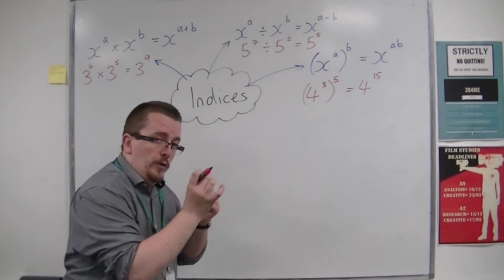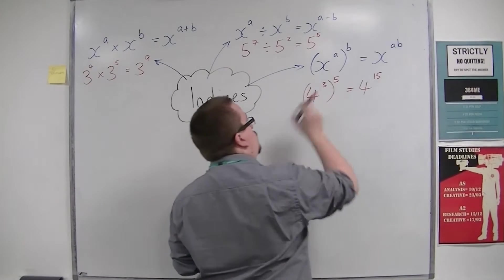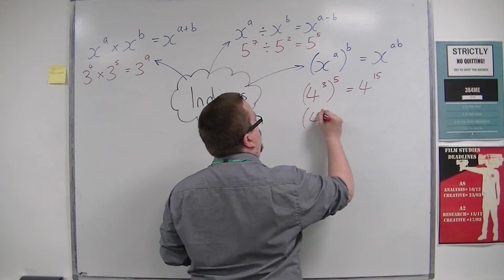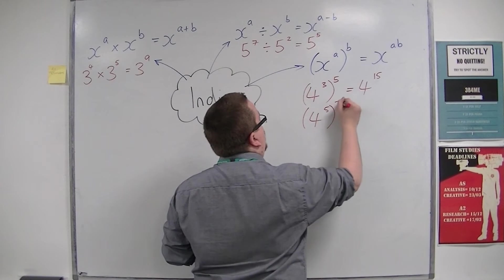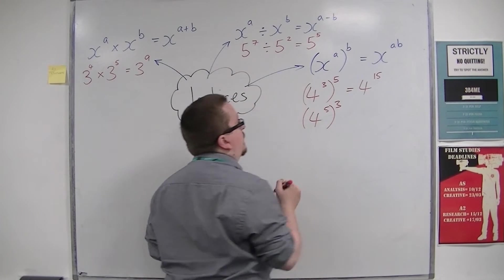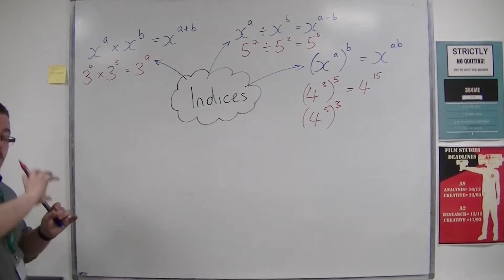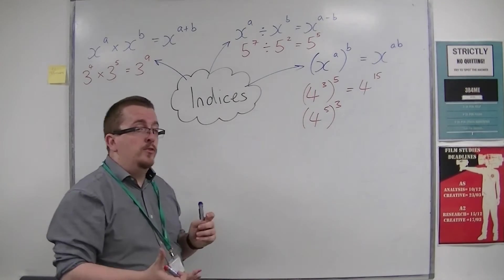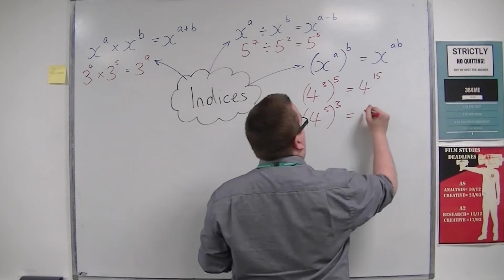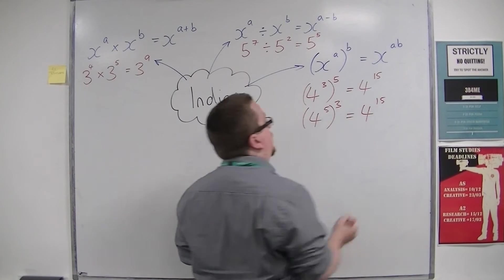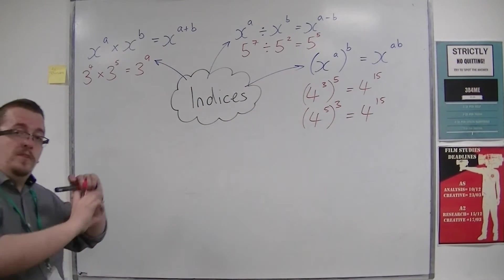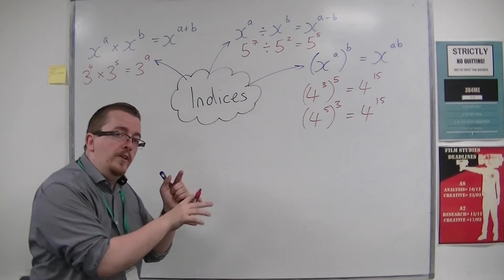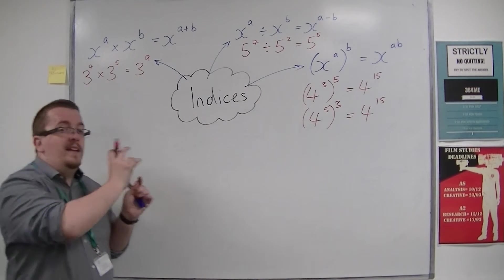What's useful is that you could rewrite this as 4 to the power of 5 cubed. You can reverse those because 3 times 5 is the same as 5 times 3, so both would give you the same answer.